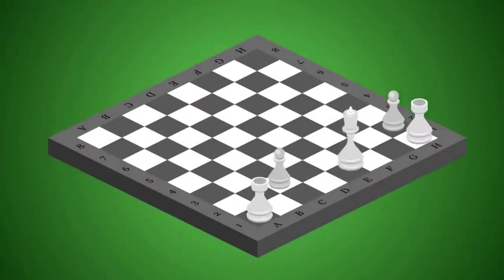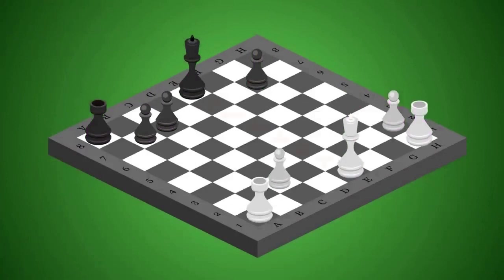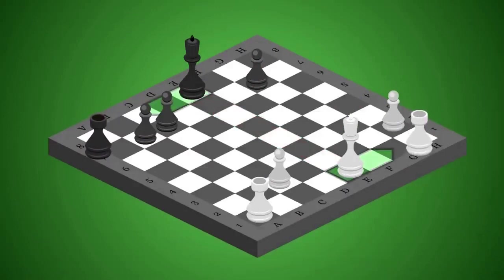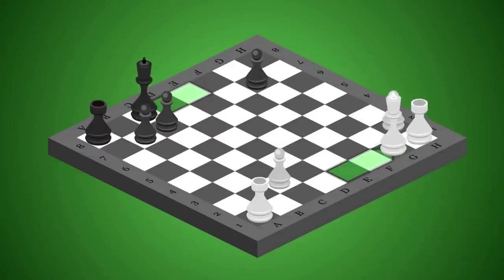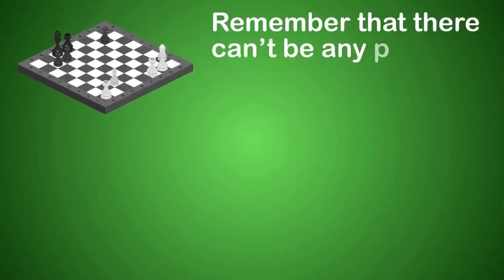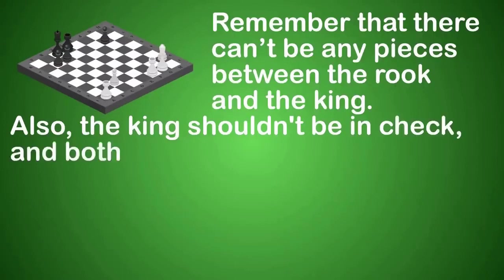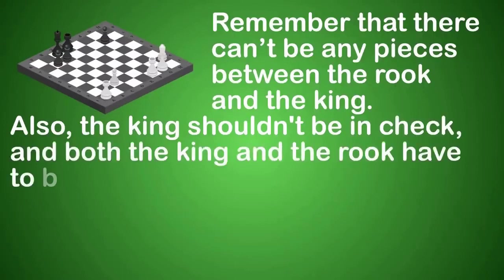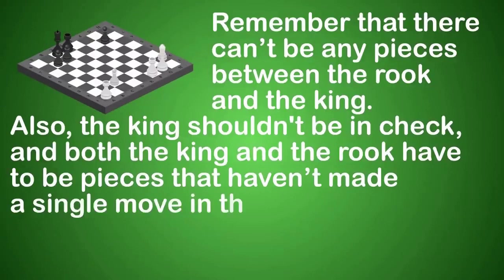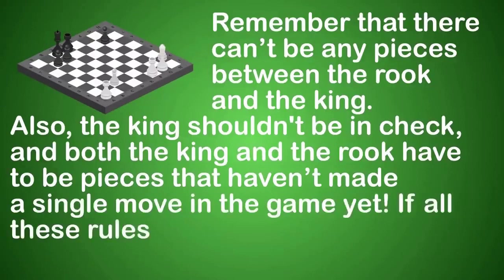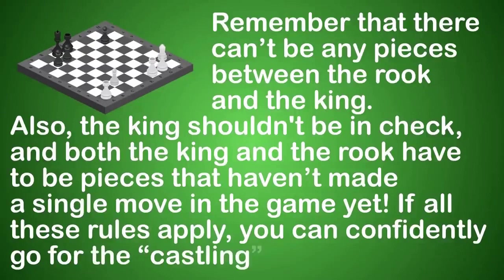Finally, there's a very useful castling move to protect the king. It's used to get the king out of the middle of its rank where he's exposed to the most danger. To make the castling move, move your king 2 squares toward any rook, and then hop that rook over the king so it lands on the square next to the king. Remember that there can't be any pieces between the rook and the king. Also, the king shouldn't be in check, and both the king and rook have to be pieces that haven't made a single move in the game yet. If all these rules apply, you can confidently go for the castling move.